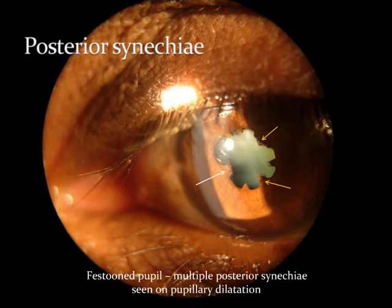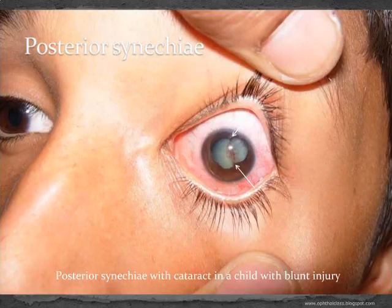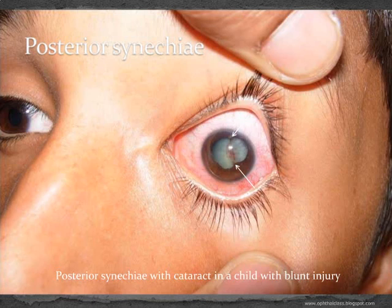Such a pupil is also called a festooned pupil. This is a child who came with blunt trauma and still has the condition in the eye. When initially presented, we could not see the anterior segment structures at all because the whole of the anterior chamber was filled with hyphema.